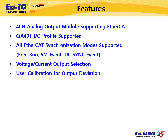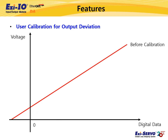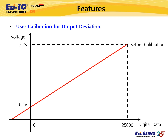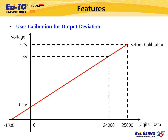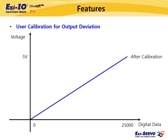Easy IO EtherCAT-DA provides an output deviation calibration function. Deviation in output signals can occur due to various conditions such as connected devices, cables, and connection methods. Easy IO EtherCAT-DA can reduce this deviation through the calibration function. For example, when the output range is 0 to 5 volts, a digital value between 0 and 25,000 should be converted to 0 to 5 volts. However, due to deviation, if the output is 0.2 volts at digital value 0 and 5.2 volts at digital value 25,000, you can set the calibration function's low value to minus 1,000 and high value to 24,000 so that the actual output is 0 to 5 volts when the digital input is in the range of 0 to 25,000.